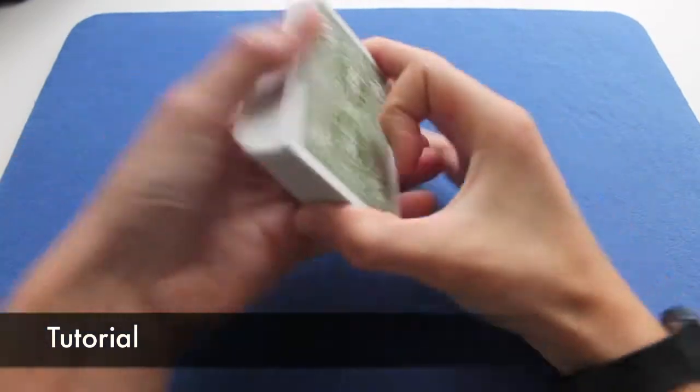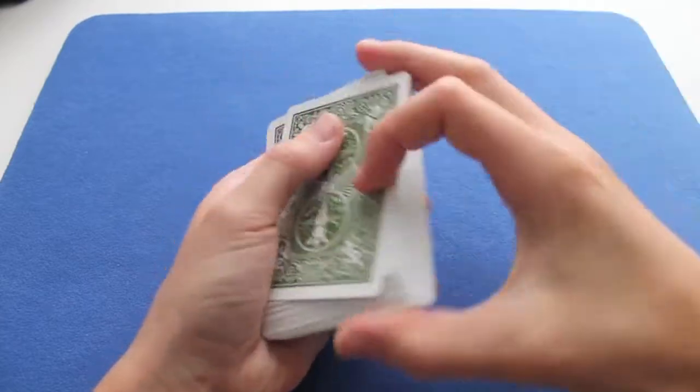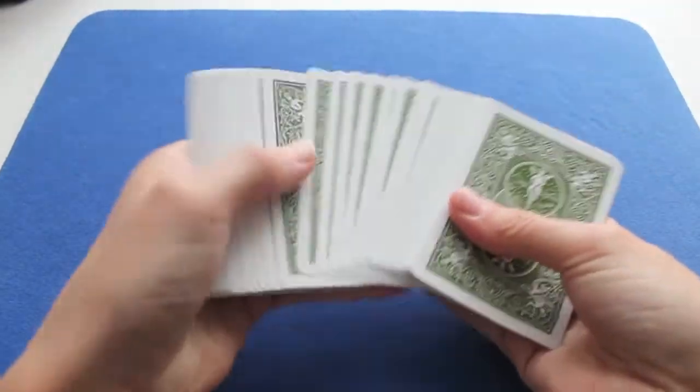So how does it work? It's actually very simple. First, you ask the spectator to shuffle the cards—perfectly normal shuffle—and then they pick a random one.